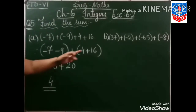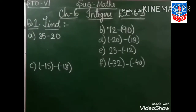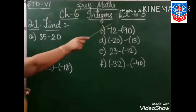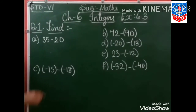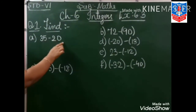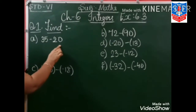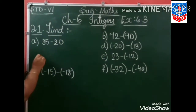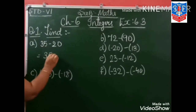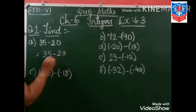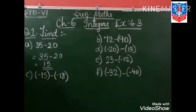Sum number B is your homework. Let us start with exercise 6.3, question 1: find 35 minus 20. Now see, positive integer — there is no sign, so this is also a positive integer. Therefore 35 minus 20 is equal to 15. This is our answer.